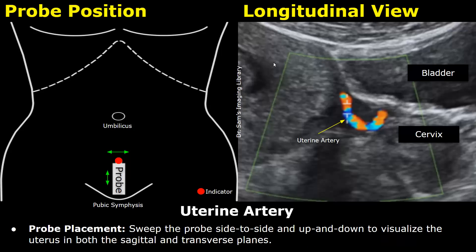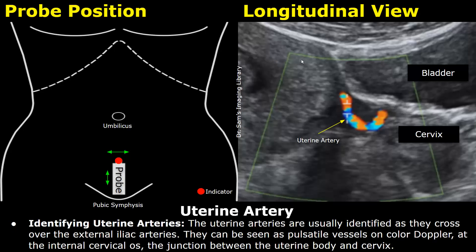Our main focus here is to locate the uterine artery. First, keep the probe in the midline in this manner, then sweep the probe side to side and also up and down to visualize the uterus. Focus on the area between the uterine body and the cervix — that is the internal cervical os. This is the landmark where you will most likely find the uterine arteries, usually seen at this location being lateral to the midline.